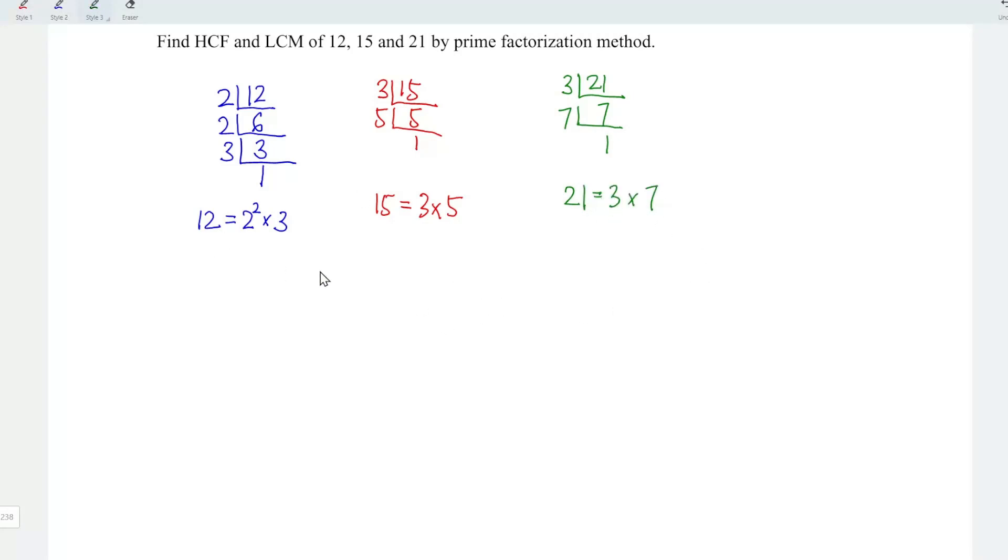Since we have obtained all the prime factors for the three numbers, we can now determine the highest common factor. Let's compare all the prime factors. As the name stated, common. The common prime factor that we can see here is 3. And hence we can conclude that 3 is the highest common factor.